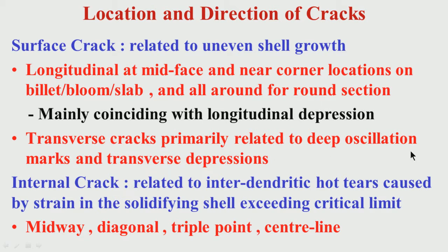If you have deep oscillation marks you can have transverse cracks, and if you have transverse depressions you can also have transverse cracks. For internal cracks, they are related to inter-dendritic hot tears. Internal cracks can occur at different locations: corner locations, central locations, triple point locations, subsurface locations, along corners or off-corners.